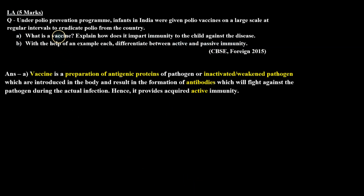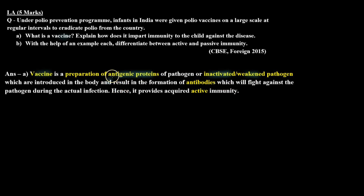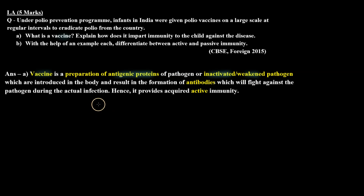In Part A we had to explain what a vaccine is and how it provides immunity. A vaccine is prepared by taking a pathogen, inactivating or weakening it, and inserting it into the human body. Alternatively, its antigenic proteins are introduced into the body, against which the body produces antibodies. In this case the human body itself is producing antibodies, so this becomes active immunity.